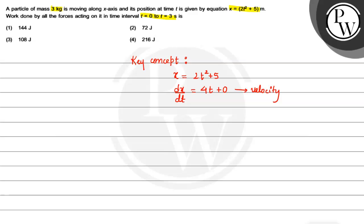And if we differentiate it with respect to time, then it will be d²x/dt² = 4. And what is double differentiation? Acceleration.